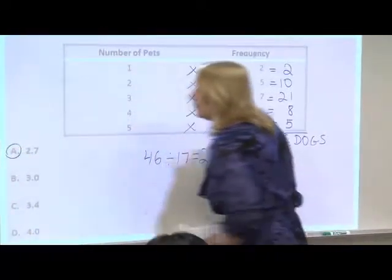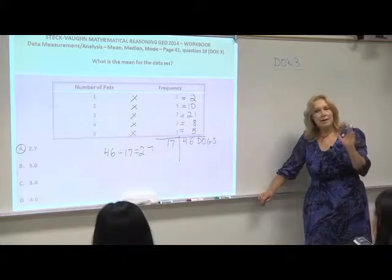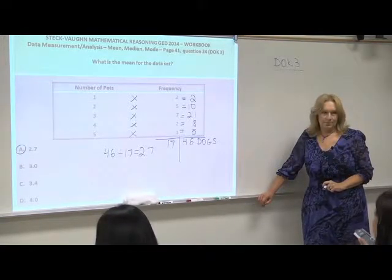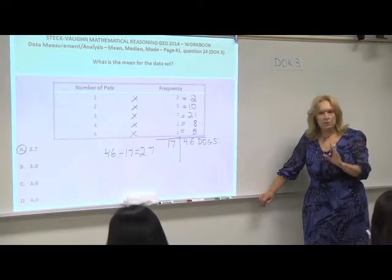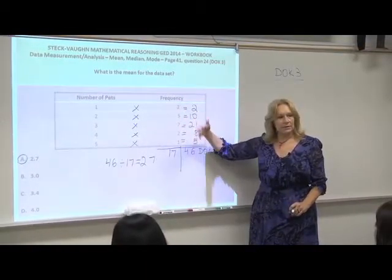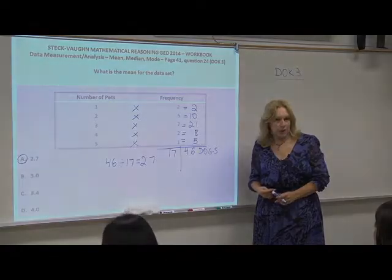That's it. So you have 46 dogs among 17 people, not five. So watch out when you have a question where you have frequency. You need to add the frequency, because each one were asked. So 17 persons were asked.